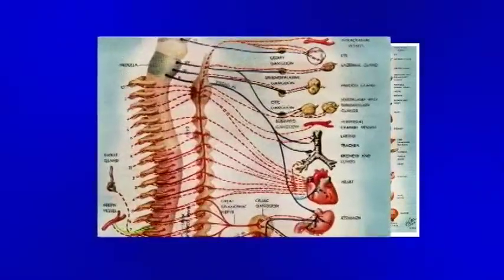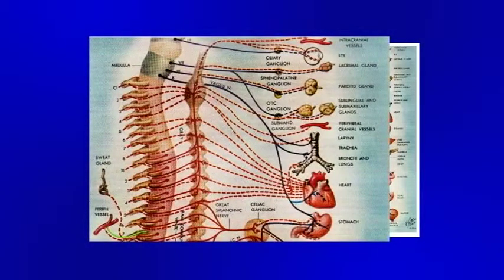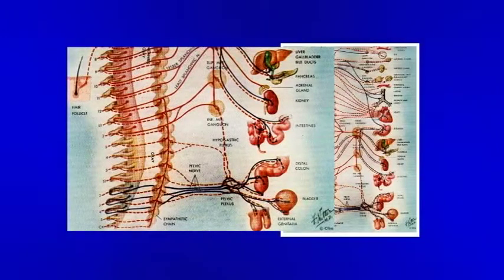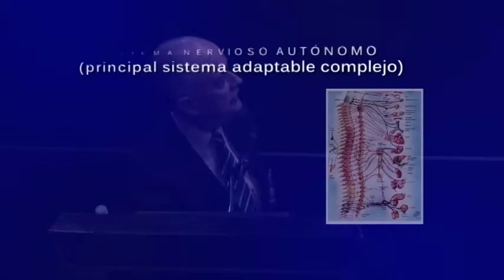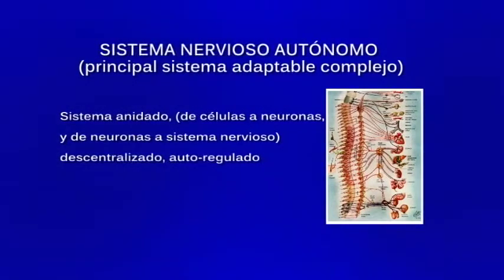El sistema nervioso autónomo es una rica red que nace de la médula espinal a lo largo de la columna vertebral, que inerva todos los órganos internos y trabaja con un yin y yang. El sistema simpático, a través de la adrenalina, es el que acelera las funciones del organismo; el parasimpático favorece las funciones de recuperación, como el sueño y la digestión. Es un sistema complejo, descentralizado: podemos tener una sección medular alta y nuestro corazón y signos vitales siguen actuando gracias a este sistema adaptable complejo.